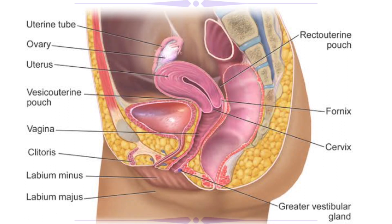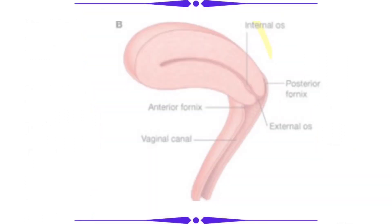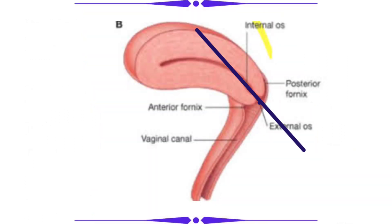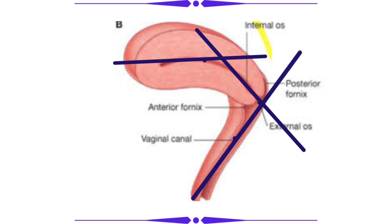I will draw a line passing through the cervix — that is nothing but the axis of the cervix. Consider this as the basic line. I can further draw two more lines along the axis of the vagina and the body of the uterus. These three lines cut each other to form two interior angles.